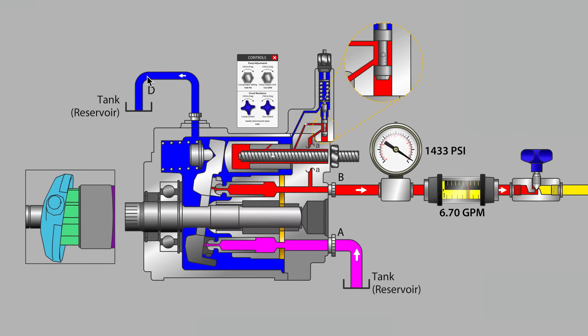Obstruction on the case drain line could reduce or stop all of those flows and the pump could very quickly move to catastrophic failure without that critical lubrication.